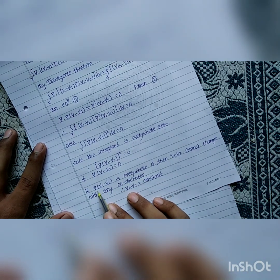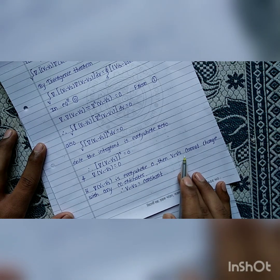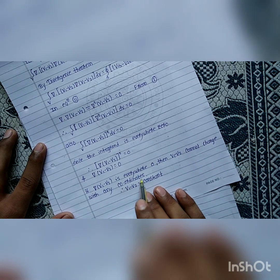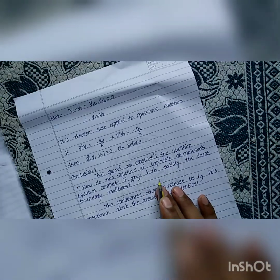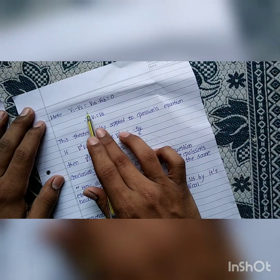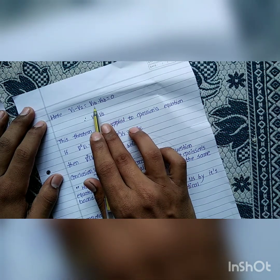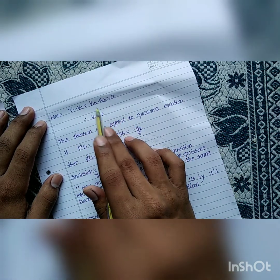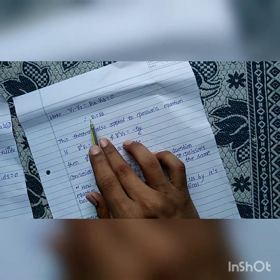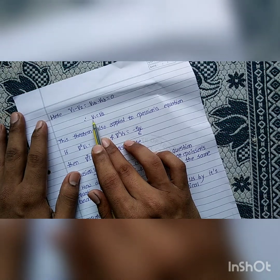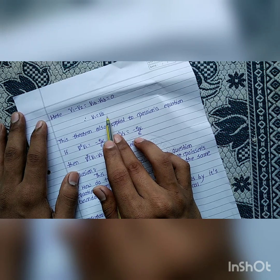If del of (v1 minus v2) is everywhere zero, then (v1 minus v2) cannot change with any coordinates. Combined with the boundary values, this means v1 minus v2 is equal to 0, therefore v1 is equal to v2. Thus this theorem states that for the Laplacian equation there is only one solution.